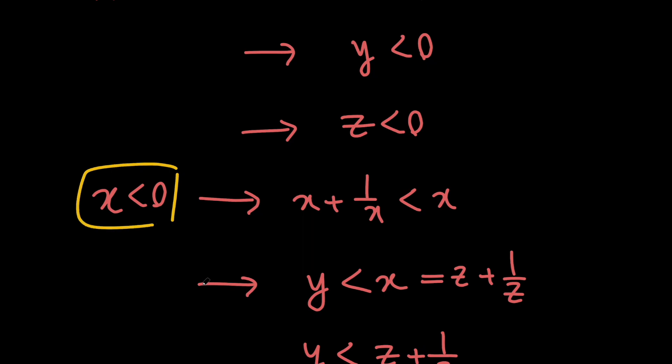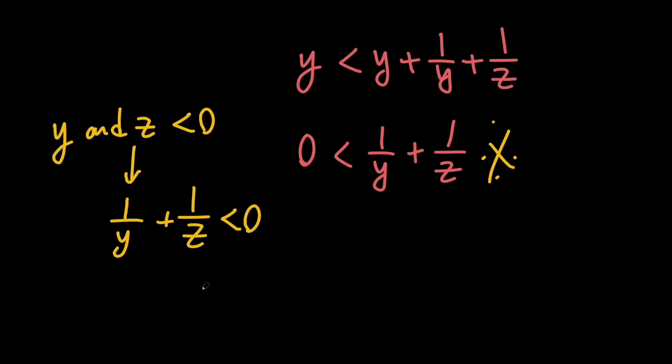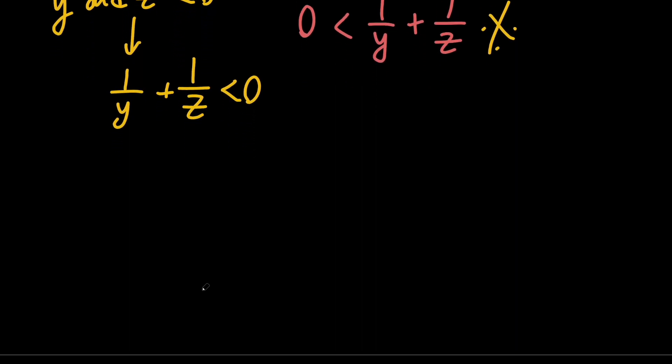We don't have any solution whenever x is positive, and we don't have any solution whenever x is negative. So we can't solve this system of equations because there is no solution.